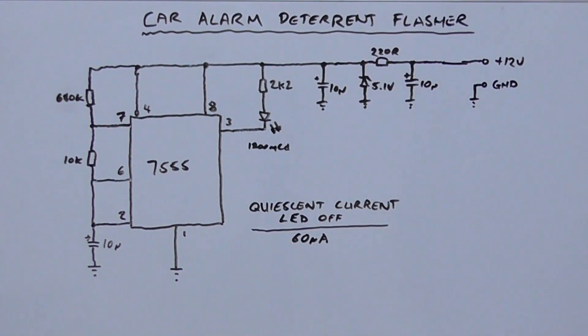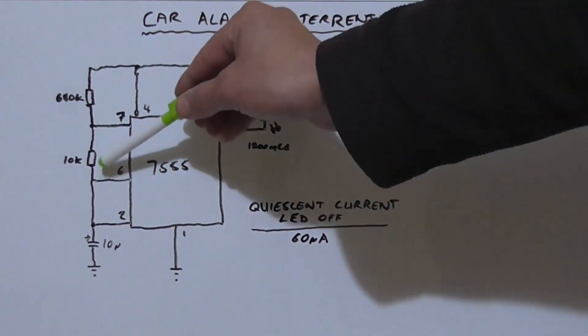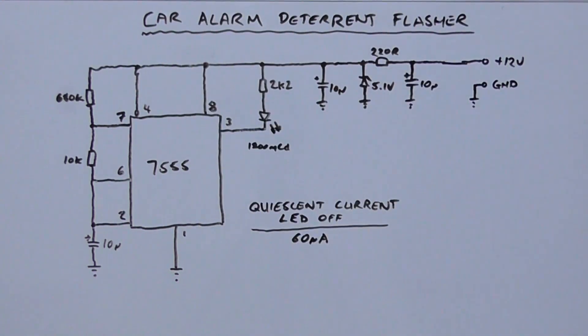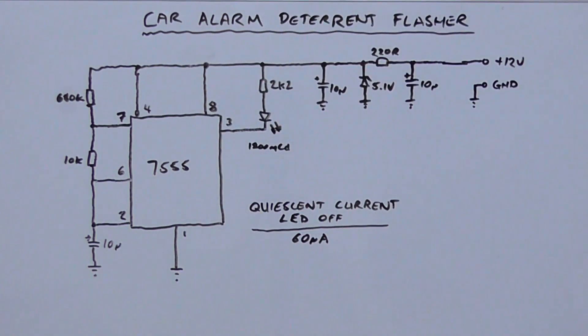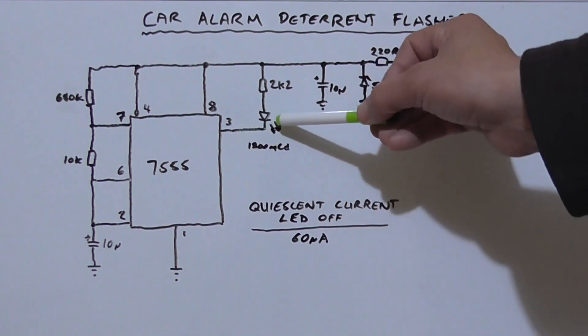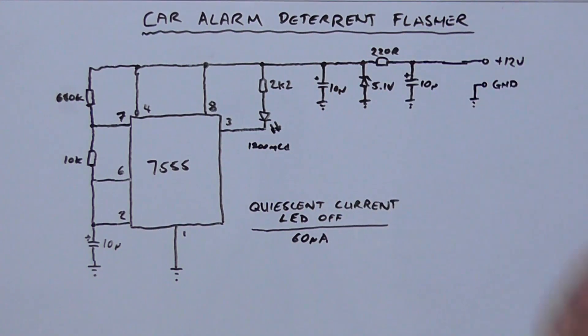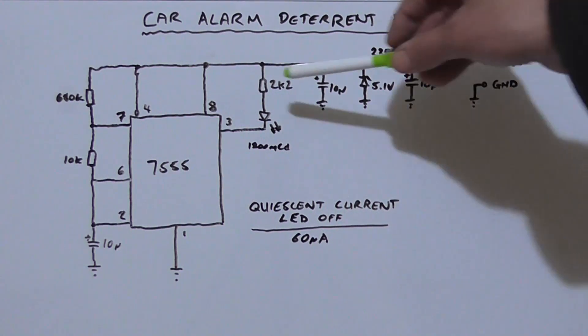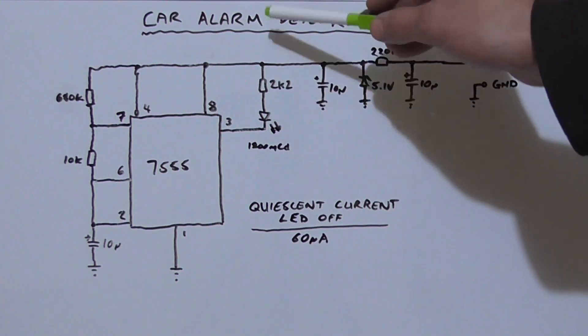It's configured in the standard astable mode, so we've got R1, R2 and C1. The values of these capacitors and resistors here give us an on time of roughly 4.5 seconds and an off time of roughly 60 odd milliseconds. And we'll notice that the LED is connected with its cathode to the output. So when the output is high for that 4.5 seconds, the LED is off. When it is low for that 60 odd milliseconds, the LED is allowed to illuminate.